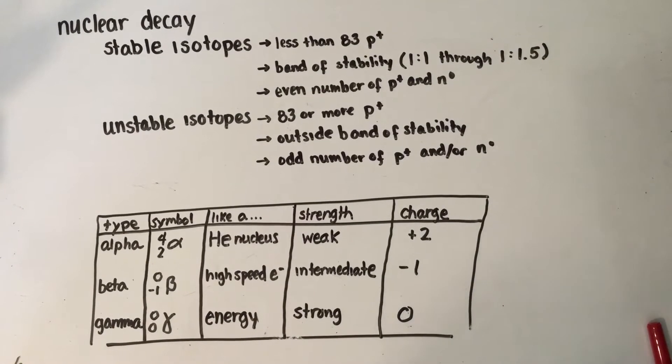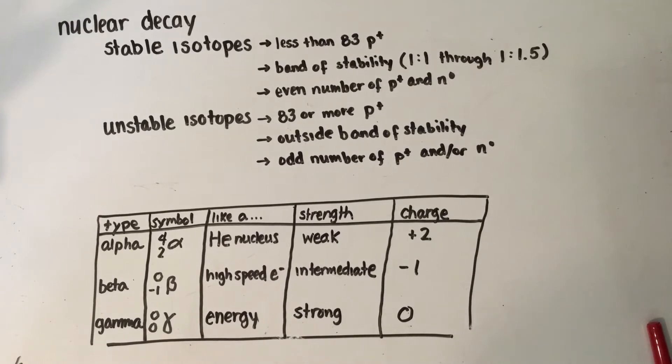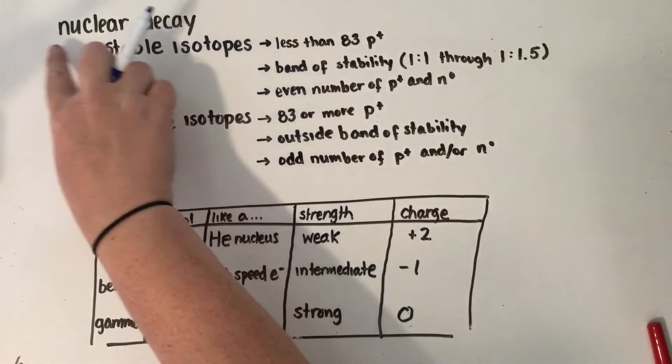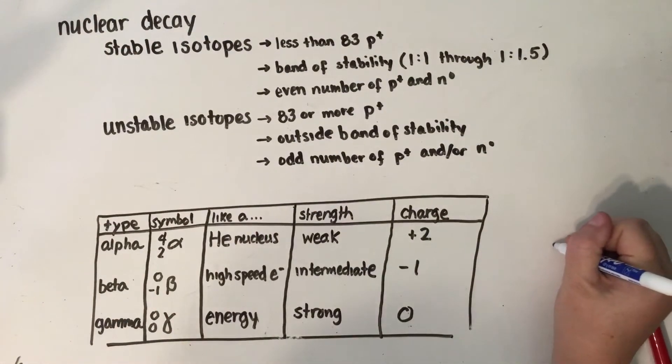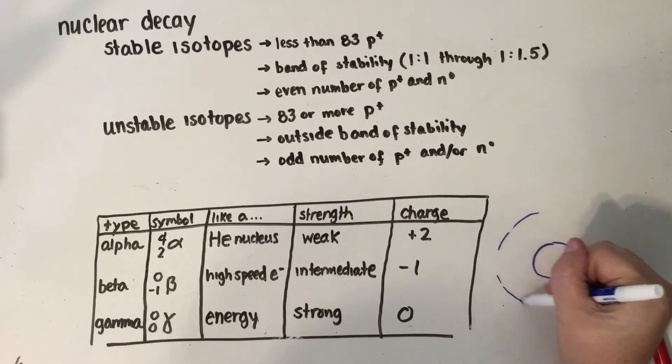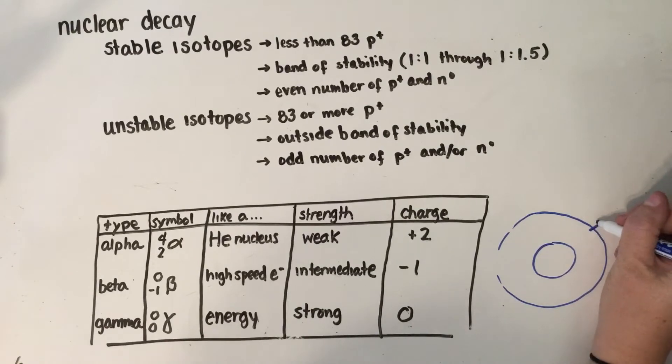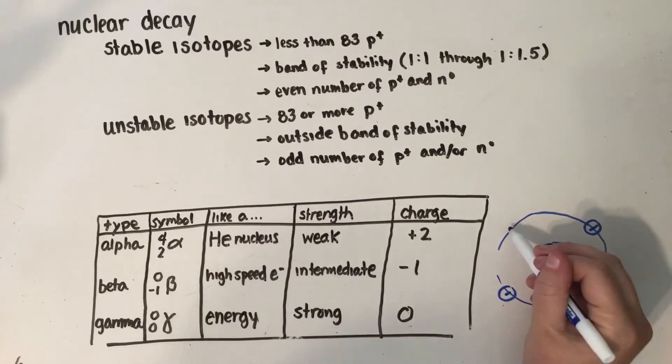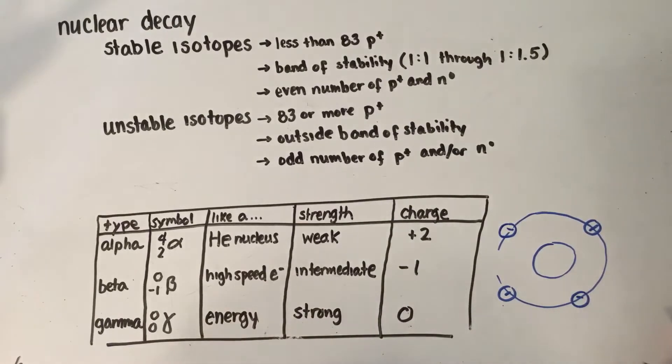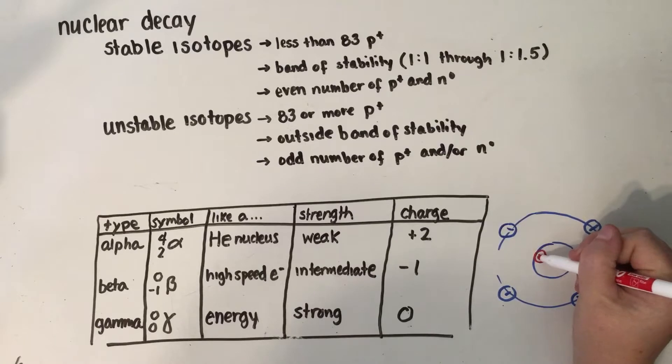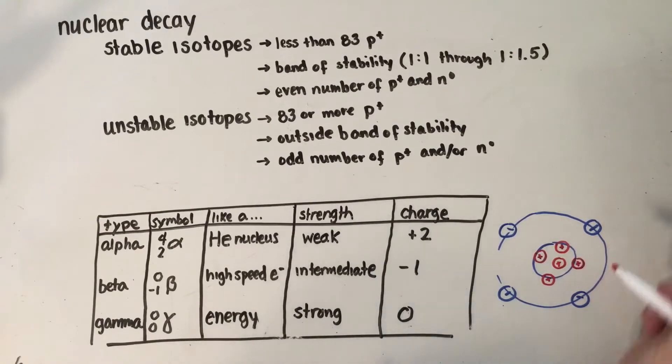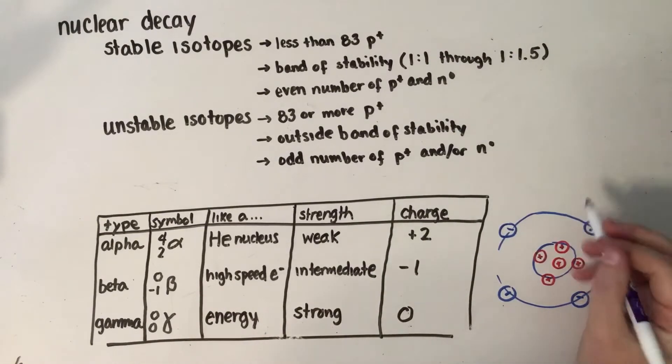Today we're going to look at the stability of the nucleus and what happens when a nucleus is not stable. Keep in mind when we're looking at nuclear decay we're focusing on the nucleus of the atom, which is the center of the atom. It's where the protons and neutrons are found, whereas outside the nucleus we have the electrons found in those energy levels or the electron cloud. In the nucleus we have our protons, which are positive subatomic particles, and we also have our neutrons or our neutral subatomic particles.